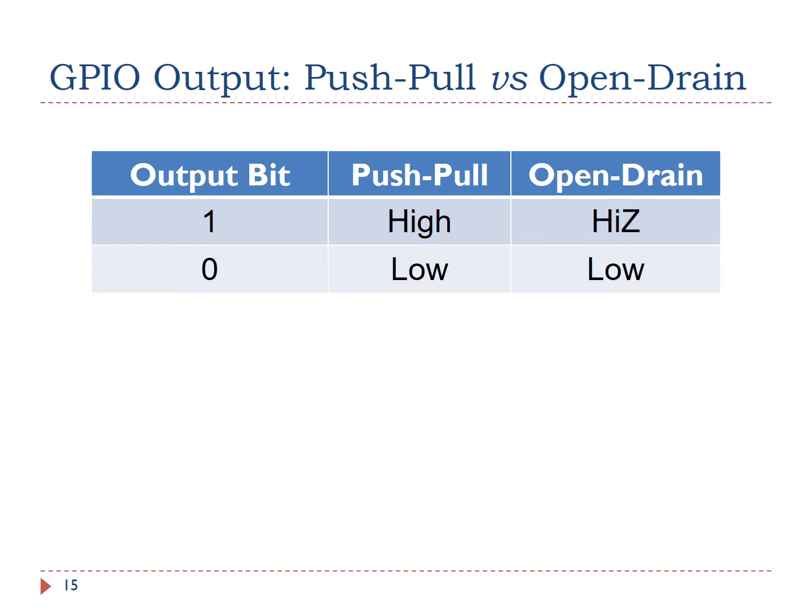This table summarizes the difference between push-pull and open-drain. Their difference is that, in the push-pull output, when the output data bit is 1, the output pin has a high voltage. However, in the open-drain output, when the output data bit is 1, the output pin is floating, or has high impedance.